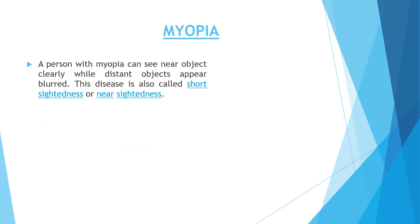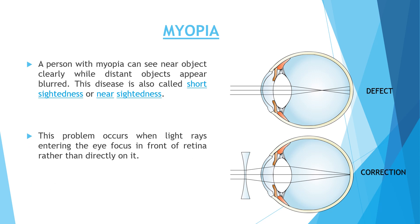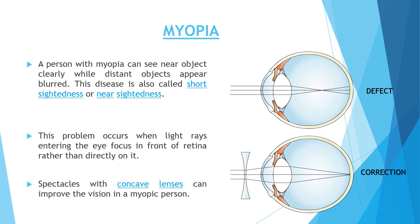Number 1: Myopia. A person with myopia can see near objects clearly while distant objects appear blurred. This disease is also called short-sightedness or near-sightedness. This problem occurs when light rays entering the eye focus in front of the retina rather than directly on it. Using spectacles with concave lenses can improve the vision in a myopic person.